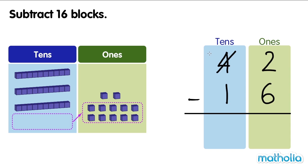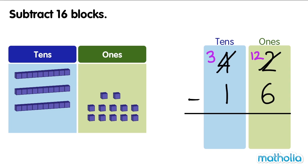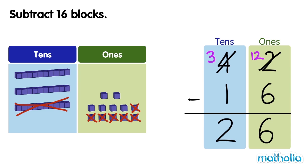Now we have three tens and twelve ones. Now we can subtract the ones. Twelve ones minus six ones equals six ones. Next, subtract the tens. Three tens minus one ten equals two tens. There are twenty-six blocks left. Forty-two minus sixteen equals twenty-six.